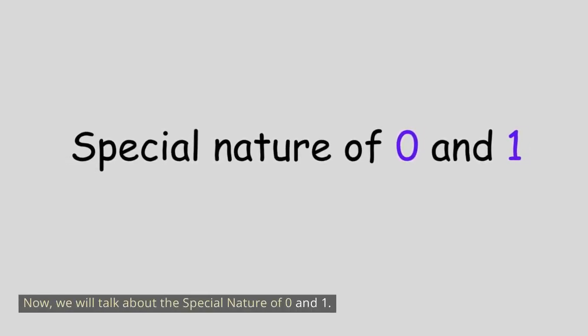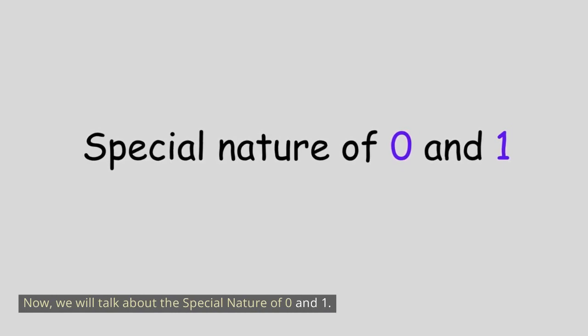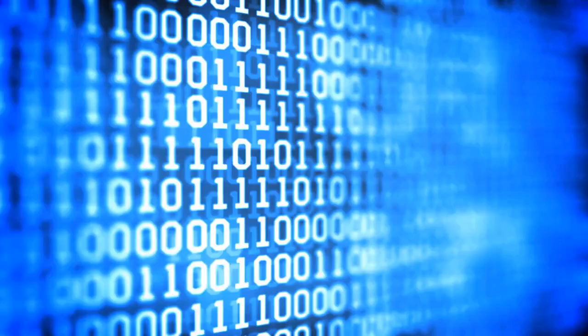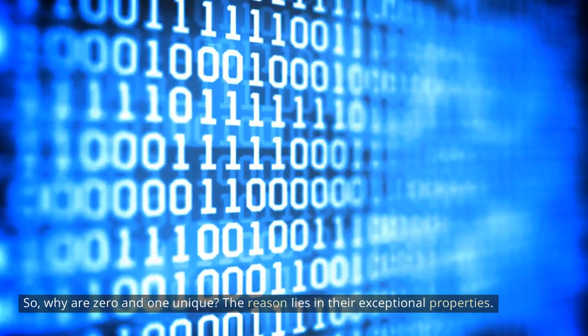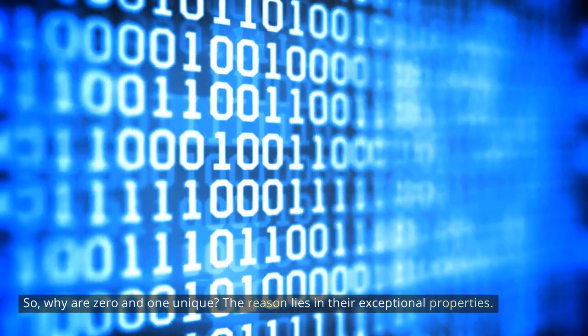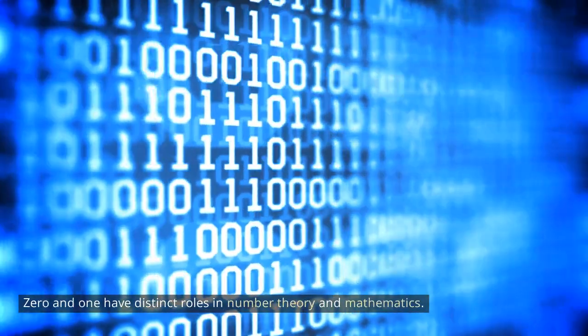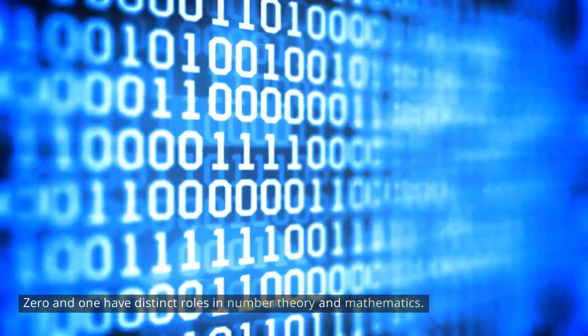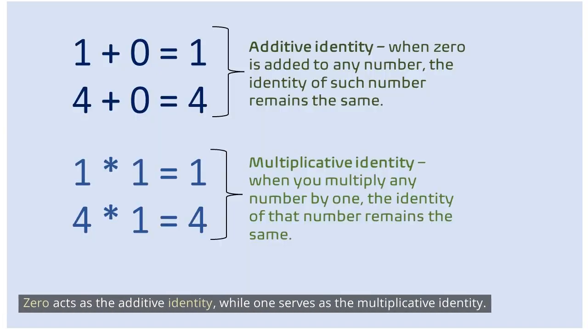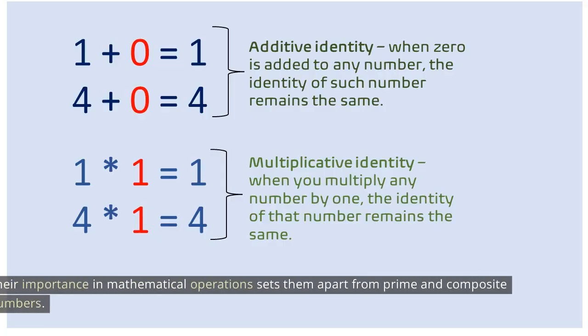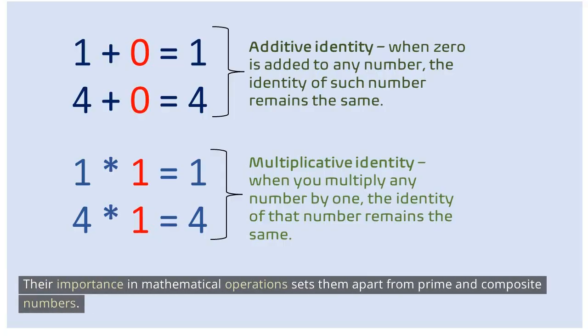Now, we will talk about the special nature of 0 and 1. So, why are 0 and 1 unique? The reason lies in their exceptional properties. 0 and 1 have distinct roles in number theory and mathematics. 0 acts as the additive identity, while 1 serves as the multiplicative identity. Their importance in mathematical operations sets them apart from prime and composite numbers.